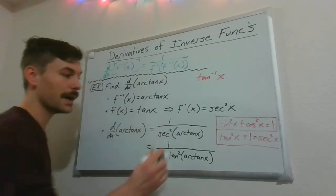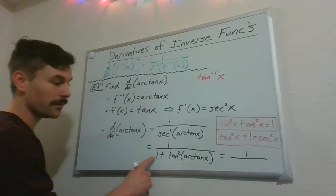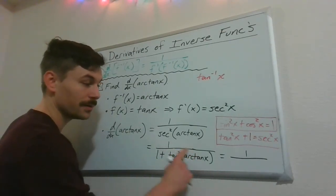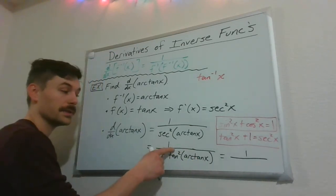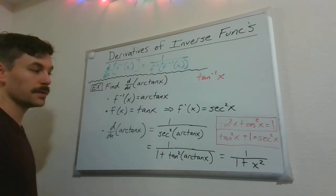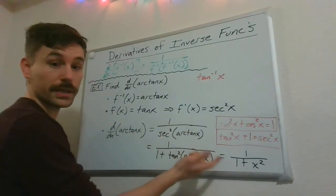So we get something really, really nice to happen. We still have just that 1 on top. But we have 1 plus, again, these composed just gives us x, and then we square it. So 1 plus x squared. So we started with something kind of ugly. We were able to get something that's actually pretty nice.